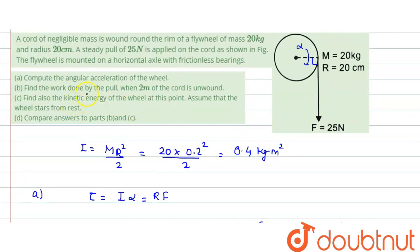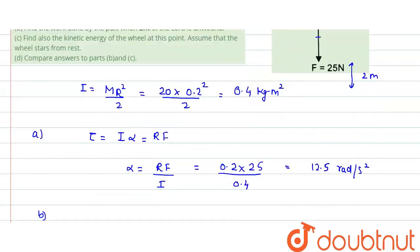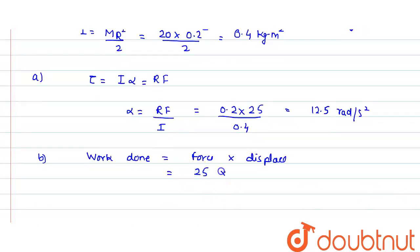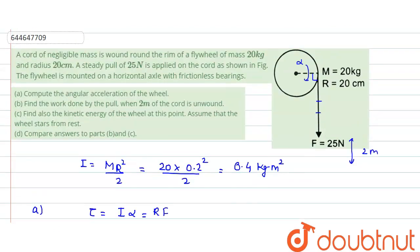In part (b), we find the work done by the pull when 2 meters of the chord is wound. If 2 meters of the chord is wound, the force is displaced by a distance of 2 meters, since the chord is inextensible and every point moves the same distance. Work done equals force multiplied by displacement, which is 25 times 2, giving work done equal to 50 joules.